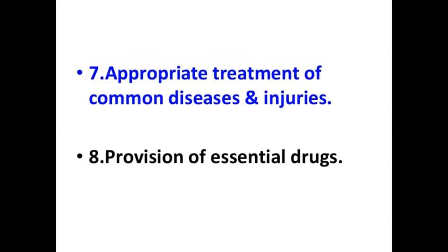Appropriate treatment of common diseases and injuries is another element. Primary health care provides appropriate treatment to common diseases like cough, cold, and fever, as well as minor injuries such as dressings, suture removals, and suturing. Provision of essential drugs is also included, such as anti-tuberculosis drugs, anti-retroviral drugs, and chemotherapy drugs — drugs supplied by the government which are effective.